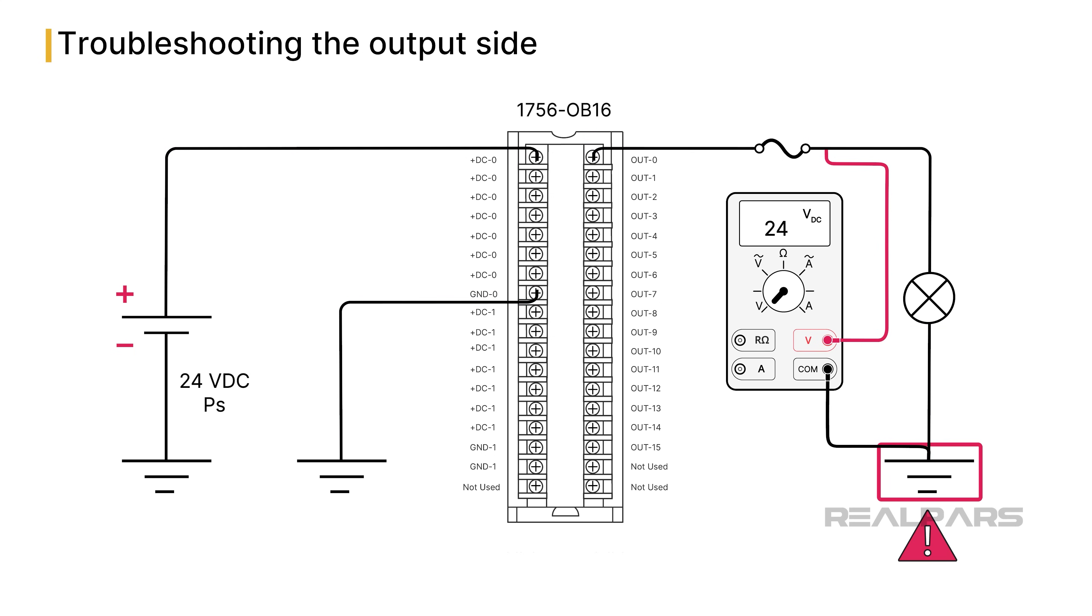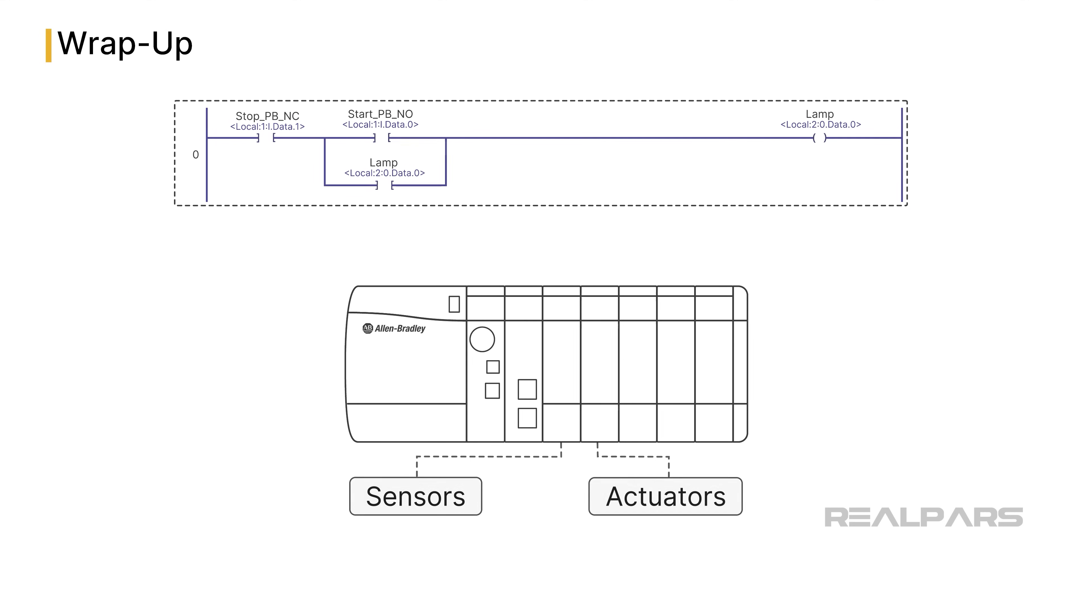This might seem odd, but the next step is to move the voltmeter's red lead to the lamp's ground side. If the voltmeter reads 24 volts DC, the lamp is fine, and the fault is either a broken wire between the lamp and the ground, or corroded ground connection. If the voltmeter reads 0 volts DC, the lamp is defective.